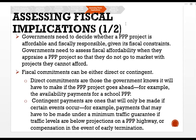Governments need to decide whether a PPP project is affordable and fiscally responsible given fiscal constraints. Governments need to assess fiscal affordability before they go to market with procurement. Fiscal commitments can be either direct or contingent. Direct commitments are those the government knows it will have to make if the PPP goes ahead — for example, availability payments for a school PPP. Contingent payments are those that will only be made if certain events occur — for example, payments that may have to be made under a minimum traffic guarantee if traffic levels are below projections, or compensation in the event of any termination.